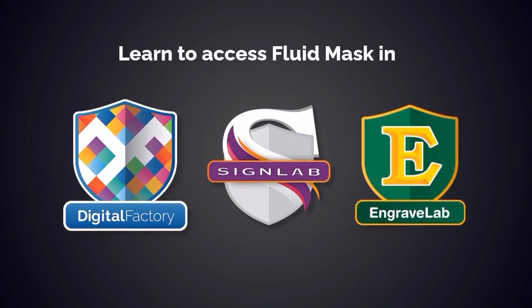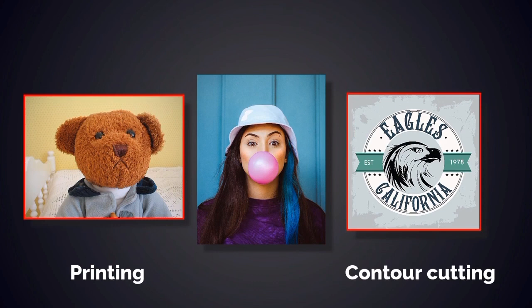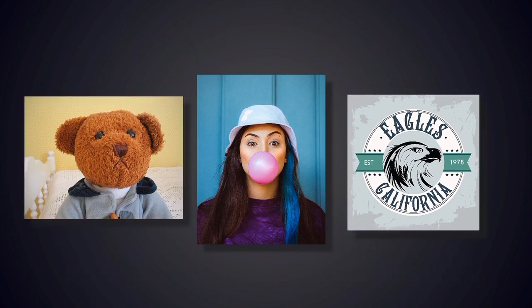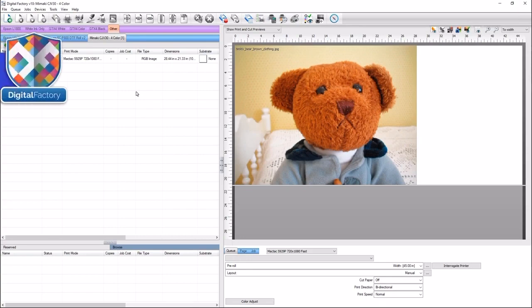In this video we'll show you how to access Fluid Mask in Digital Factory, Sign Lab, or Engrave Lab and give you an introduction on how to get started. We'll use three examples to demonstrate how Fluid Mask works for different image scenarios. The teddy bear and the Eagles California logo can be used for printing or contour cutting. Creating a contour cut for the woman with the bubble can be difficult with her fine hair, and we'll demonstrate how well Fluid Mask removes the background from behind fine elements like hair.